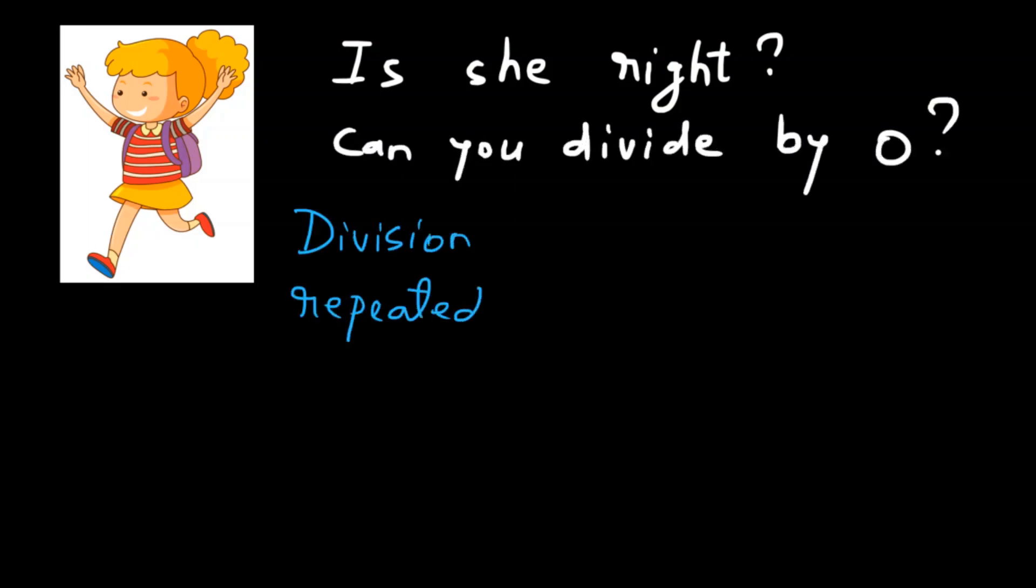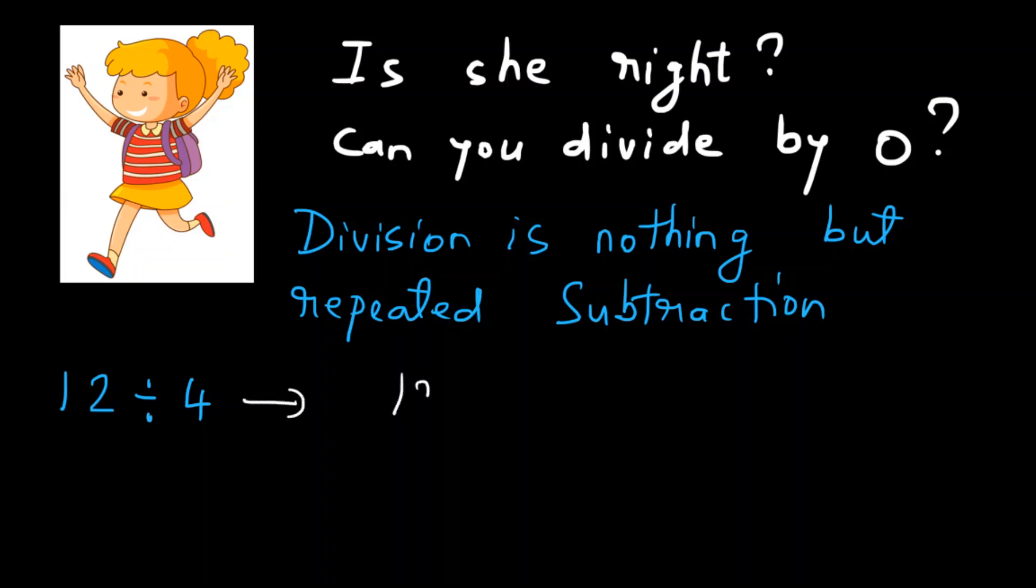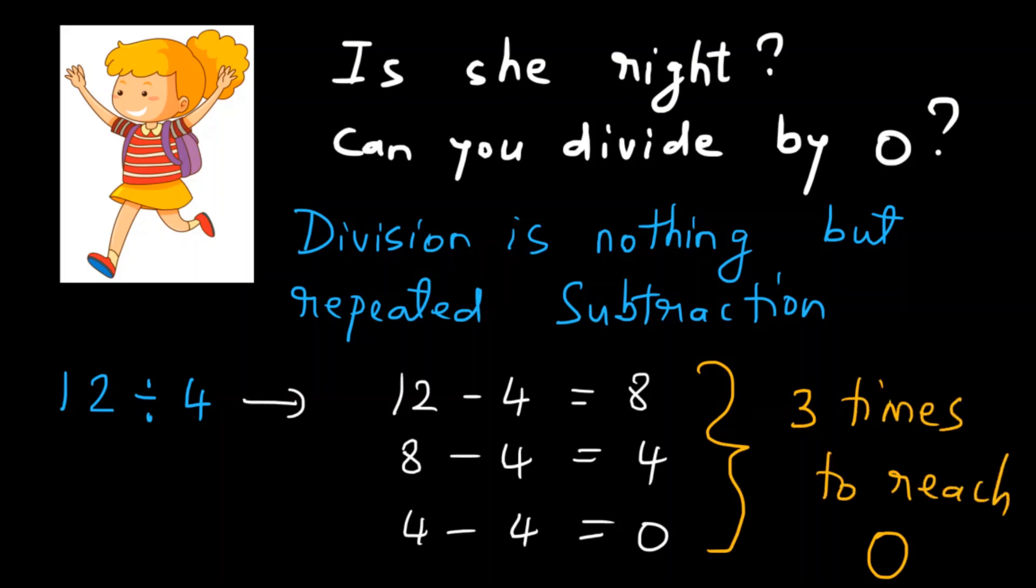Division is nothing but repeated subtraction. For example, if you are dividing 12 by 4, let's try to do that. So, we start with 12 minus 4, that gives us 8. Now, let's do 8 minus 4, that gives us 4. And 4 minus 4, that gives us 0. So, we had to do the subtraction 3 times to reach 0. That's why 12 divided by 4 is equal to 3.